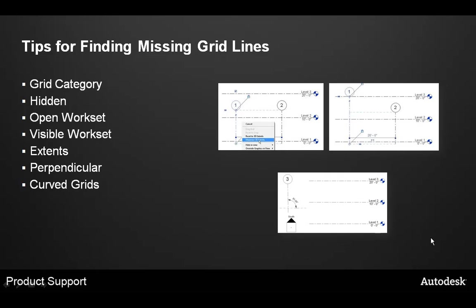Next, let's get some tips for finding missing grid lines in your project. First, always check Visibility and Graphics in the view and make sure the grids annotation category is actually turned on. This is an important first step to make sure that the grids are set to be visible.